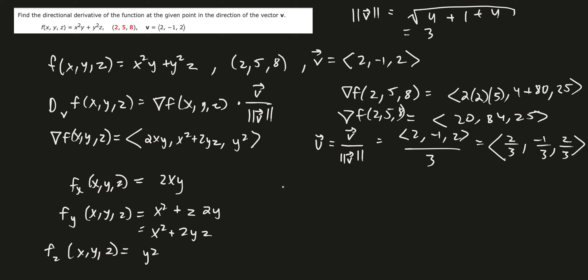And we can go ahead and find the direction derivative in the direction of u, which is also the same thing as the direction of v. f, x, y, z is the gradient, which is 2, 5, 8. So the gradient is just 20, 84, 25 dotted with the unit vector, which is 2 thirds, negative 1 thirds, and 2 thirds.